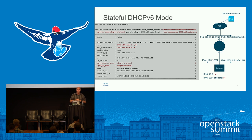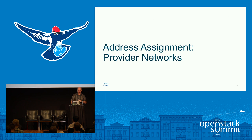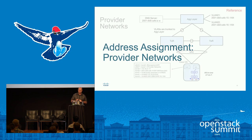Finally, stateful DHCPv6 — we change our address-mode and ra-mode to stateful. This is everything you ever knew about IPv4 DHCP, essentially the same in IPv6. We have a database with leases, lease timeframes, options — all the things we had in an IPv4 world we can have in the IPv6 world.